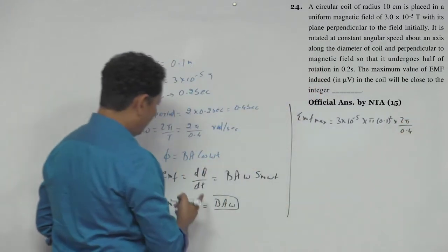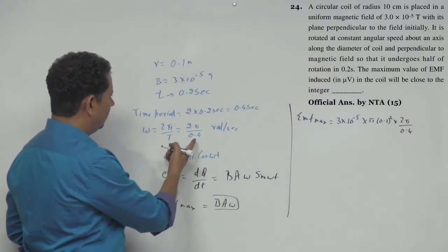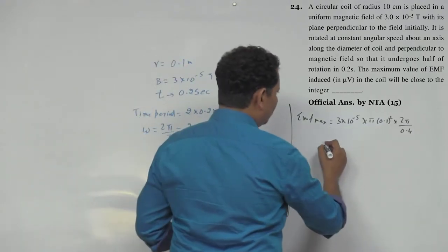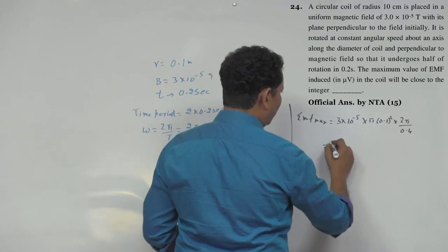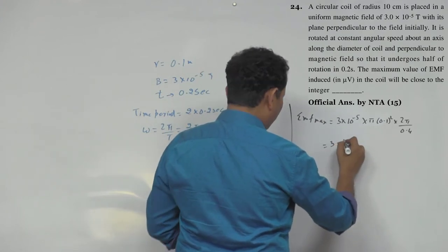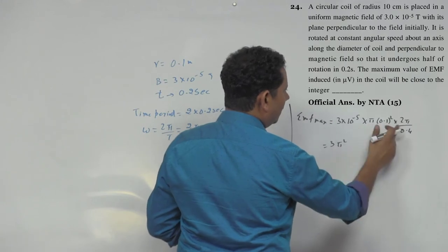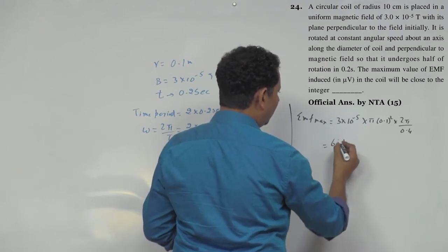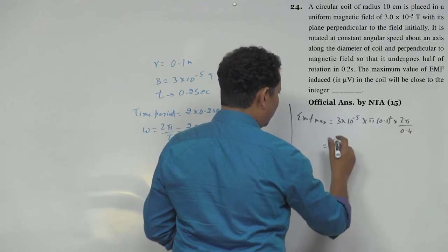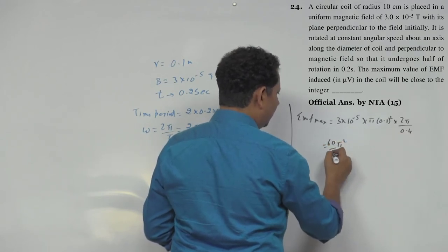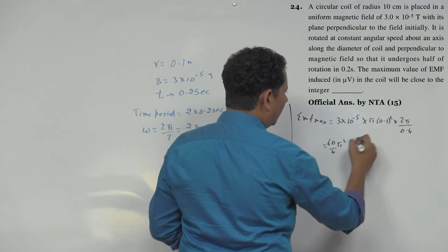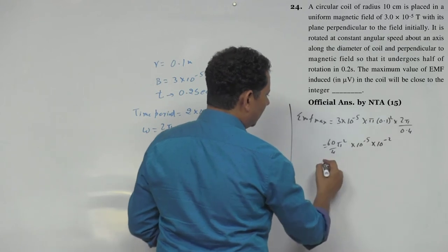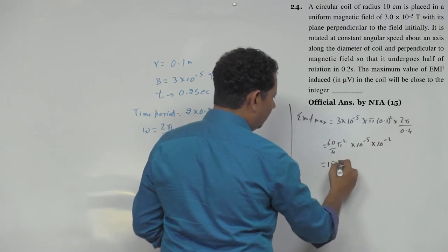We need to calculate this and get our final answer. So this will be equal to 3 multiplied by pi square into 2, becomes 6 divided by 0.4. If we take this up, we can write this as 60 divided by 4 multiplied by 10 to the power minus 1 multiplied by 10 to the power minus 2, so 15 pi square multiplied by 10 to the power minus 7.